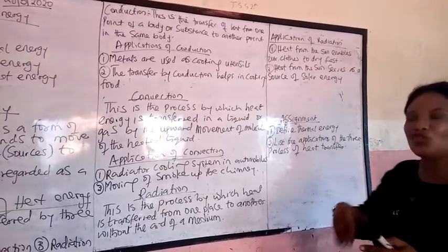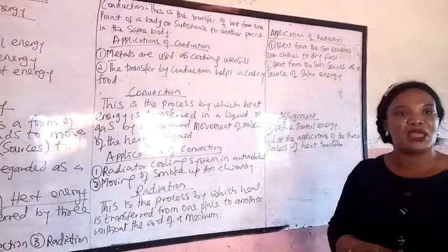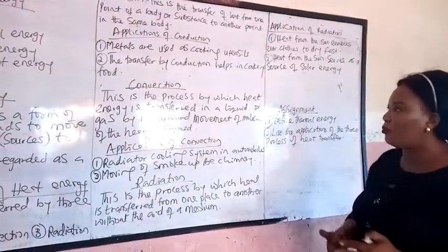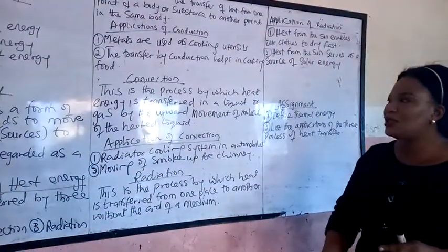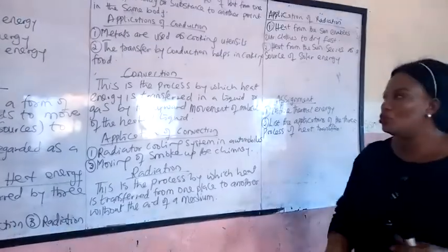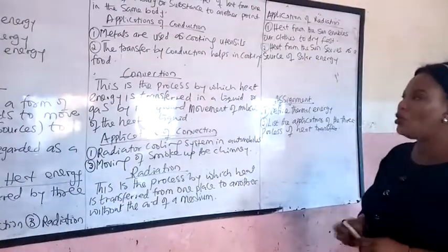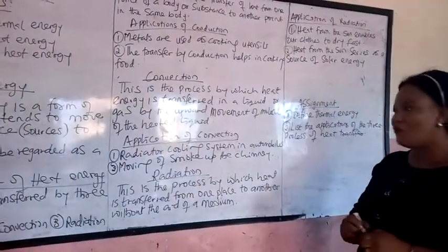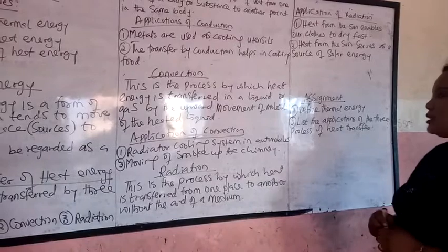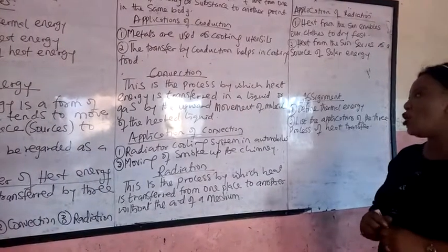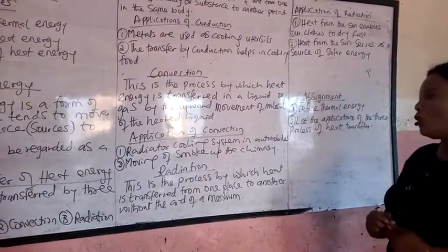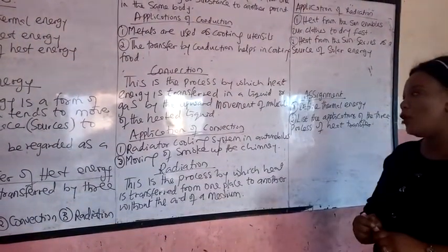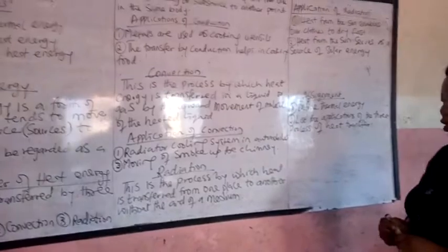Convection is only applicable in air and liquid, and it moves from the bottom upward. Applications of convection include the radiator cooling system in automobiles and smoke moving up a chimney.